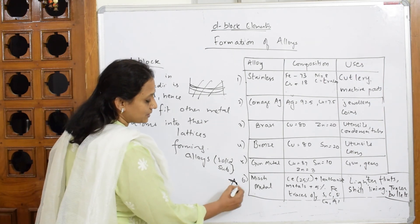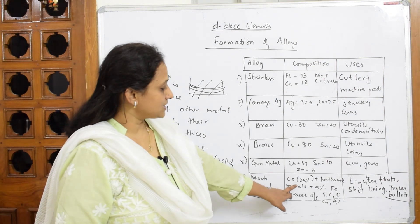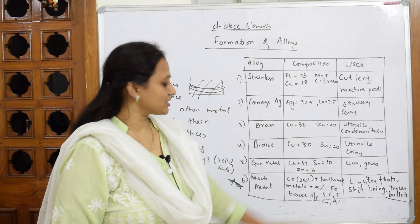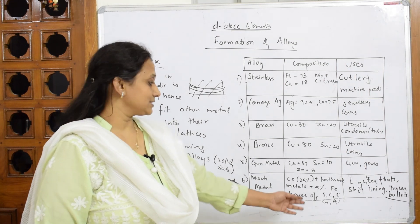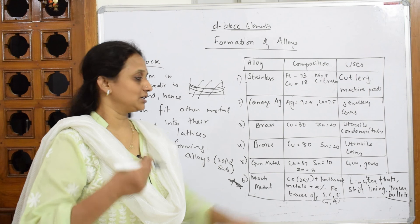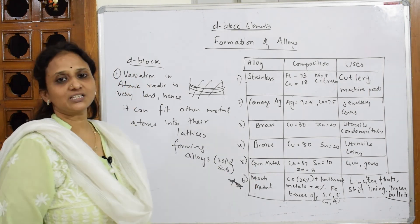Mish metal is very important. Please learn it, practice it five or six times. The composition: 95% cerium, 25% lanthanide metals, 5% iron, traces of sulfur, carbon, silicon, calcium, and aluminum. It is used in bullets and lining. Please note it carefully.